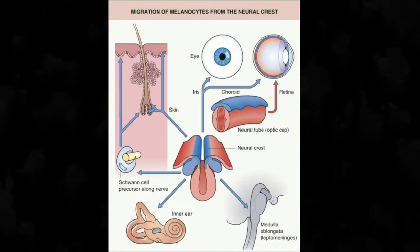Melanocytes are present in the skin — in the interfollicular epidermis and in the hair follicle bulb region. Other than that, they are also seen in the eyes: choroid, ciliary body, and iris; in the ear or cochlea; in the brain; and in the leptomeninges.